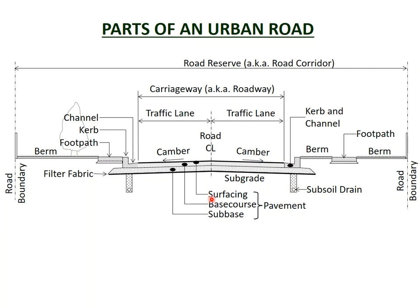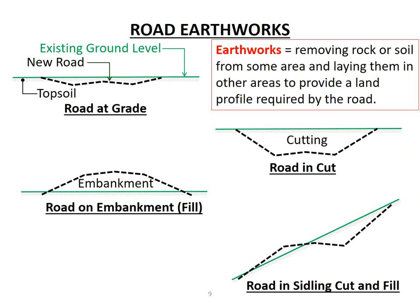We will now look at each of these components in more detail, starting at the bottom and working our way up. The existing material along the line of the road may be an existing road that needs to be repaired or rebuilt, in which case earthworks is not usually required. However, other roads may be through bush or grass areas called greenfield sites, where the road may need to be built above or below the existing ground level using earthworks — removing soil or rock from one area and relocating it to another to provide a smooth profile.